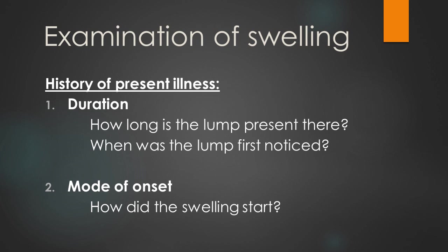Starting with the examination of swelling, in the first part we look at the history of present illness. For duration, the patient is asked leading questions such as how long is the lump present and when was it first noticed. If the swelling is of shorter duration with pain, it is an inflammatory swelling. Whereas a swelling of longer duration that is not painful is a neoplastic swelling. For mode of onset, we ask how the swelling started — did it develop spontaneously, start with pain, or grow rapidly?